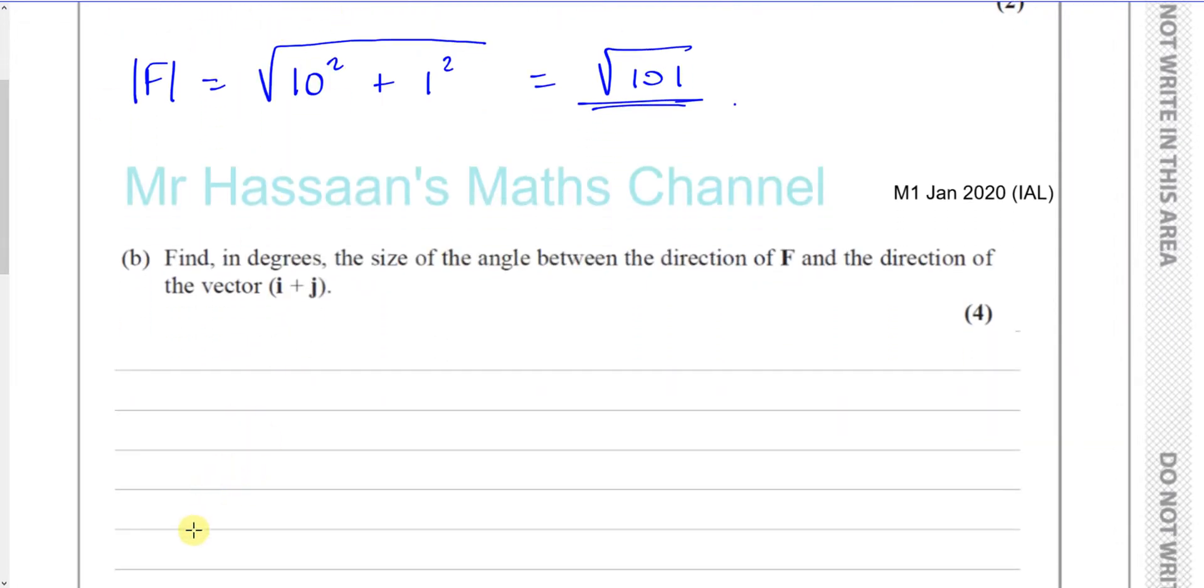Okay, now, the direction of i plus j first. Just imagine you have an origin. Now, i plus j, it's going to be the same direction horizontally as it is vertically. So the direction of i plus j will be something like this. It will be exactly 45 degrees, because you'll have one unit going this way and one unit going that way.